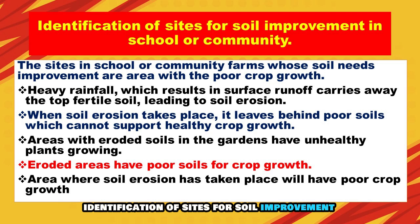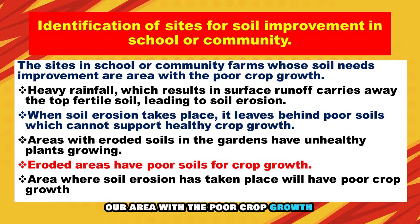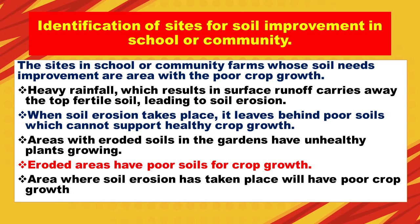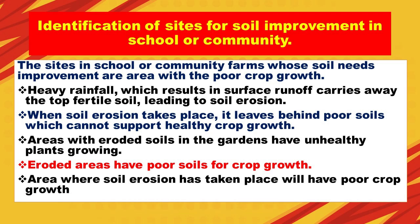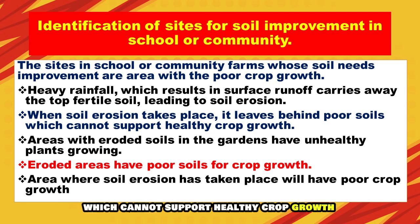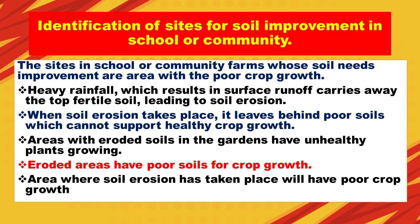Identification of sites for soil improvement in school or community: The sites in school or community farms whose soil needs improvement are areas with poor crop growth. Heavy rainfall results in surface runoff that carries away the top fertile soil, leading to soil erosion. When soil erosion takes place, it leaves behind poor soils which cannot support healthy crop growth. Areas with eroded soils in the gardens have unhealthy plants growing, and eroded areas have poor soils for crop growth.